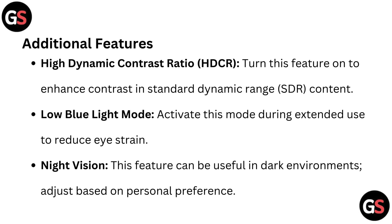Additional Features. High Dynamic Contrast Ratio (HDCR): turn this feature on to enhance contrast in Standard Dynamic Range SDR content. Low Blue Light Mode: activate this mode during extended use to reduce eye strain. Night Vision: this feature can be useful in dark environments — adjust based on personal preference.